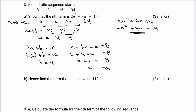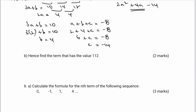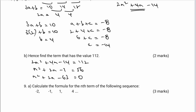The question then says: hence find the term that has the value of 112. We set 2n squared plus 4n minus 14 equal to 112 and solve. Dividing through by 2 gives n squared plus 2n minus 7 equals 56. Making it equal to zero: n squared plus 2n minus 63 equals 0. Factorising, two numbers that multiply to make 63 and add to make positive 2 are positive 9 and minus 7, giving us n plus 9 multiplied by n minus 7 equals 0.